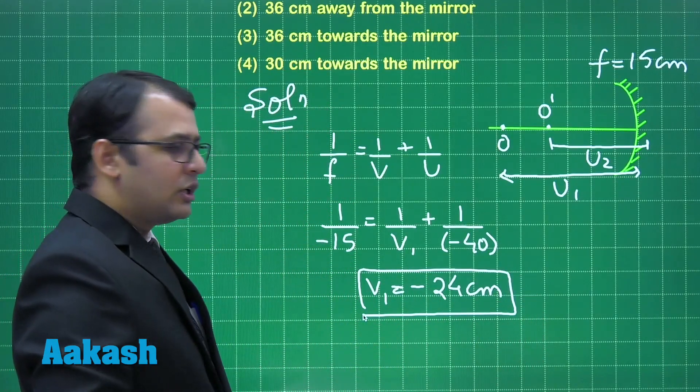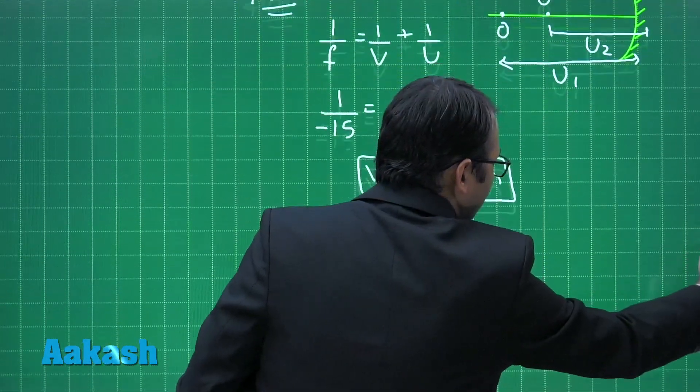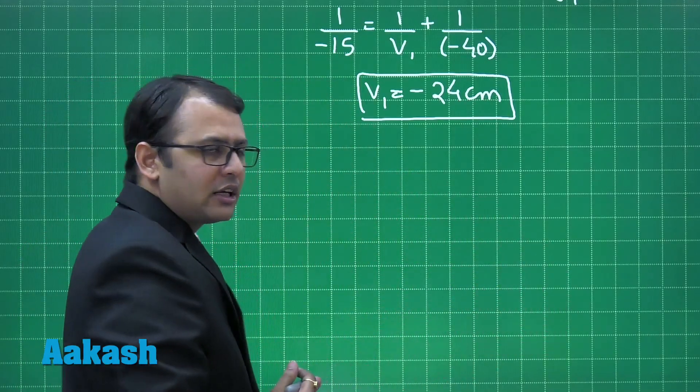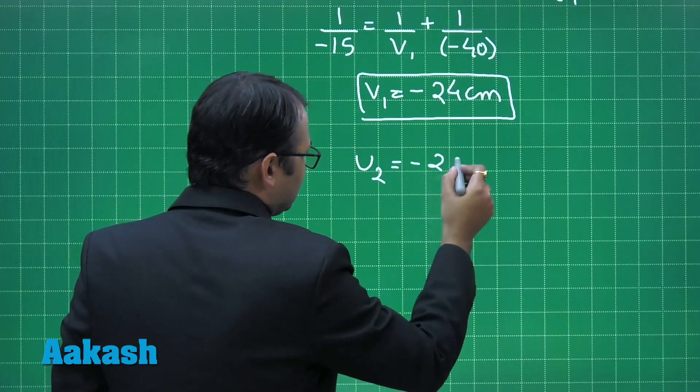So that's the first image position. Now let's see the second one. Now if you take the object 20 cm closer to the mirror, then your new object position will be minus 20 cm.